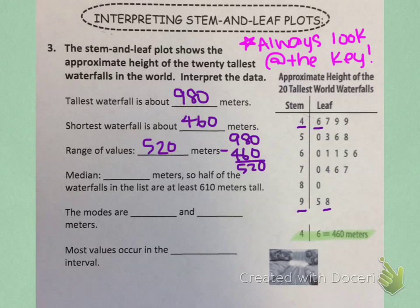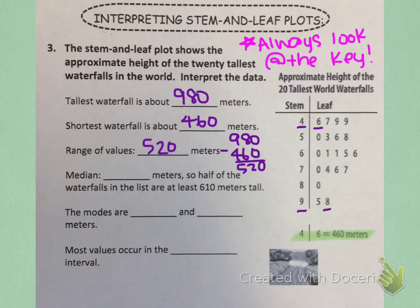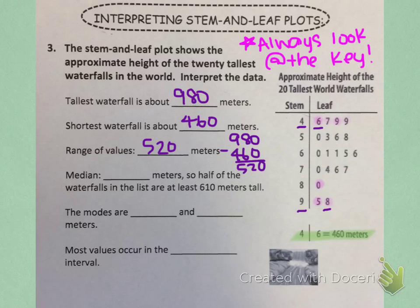Now we need to find the median. We're going to treat it the same way as if it were in a list — we're going to start at the front and mark one, go to the back and mark one, go back to the front and mark another one, go back to the back and mark another one, until we meet in the middle. I like to use a highlighter on stem and leaf plots, and we only need to mark the leaves.